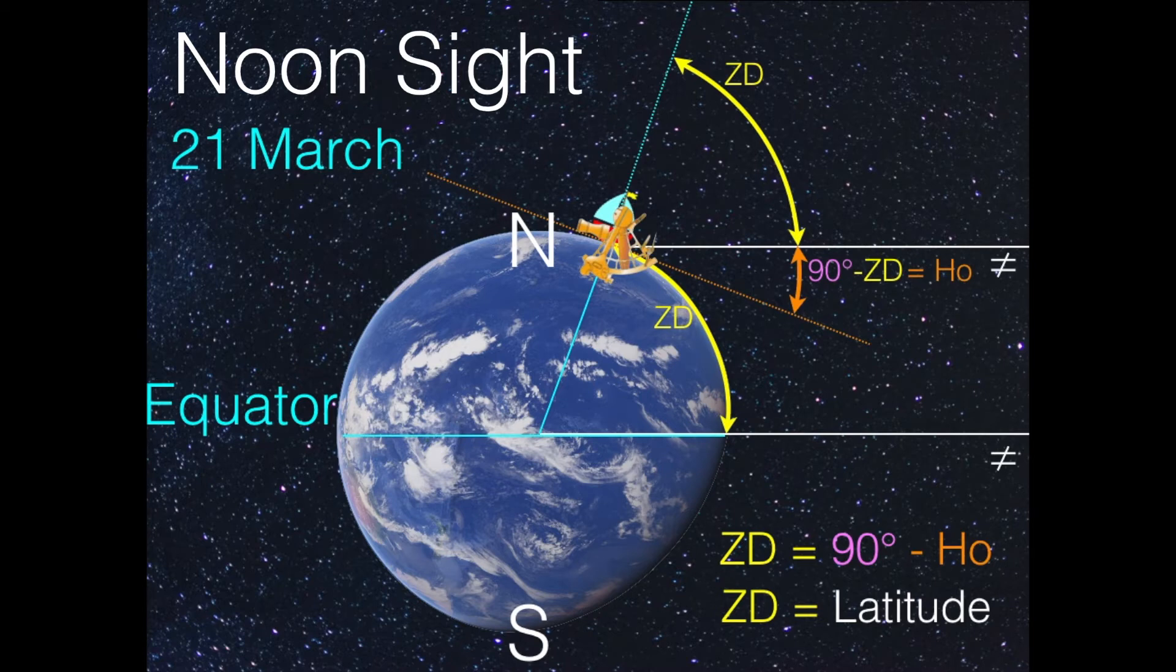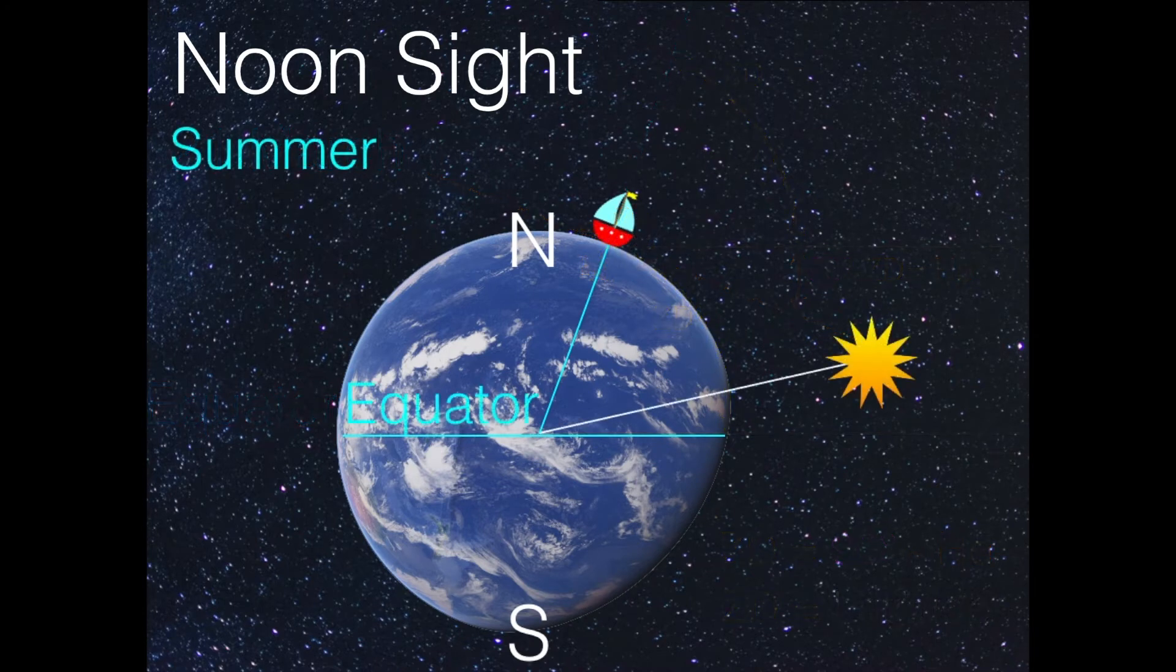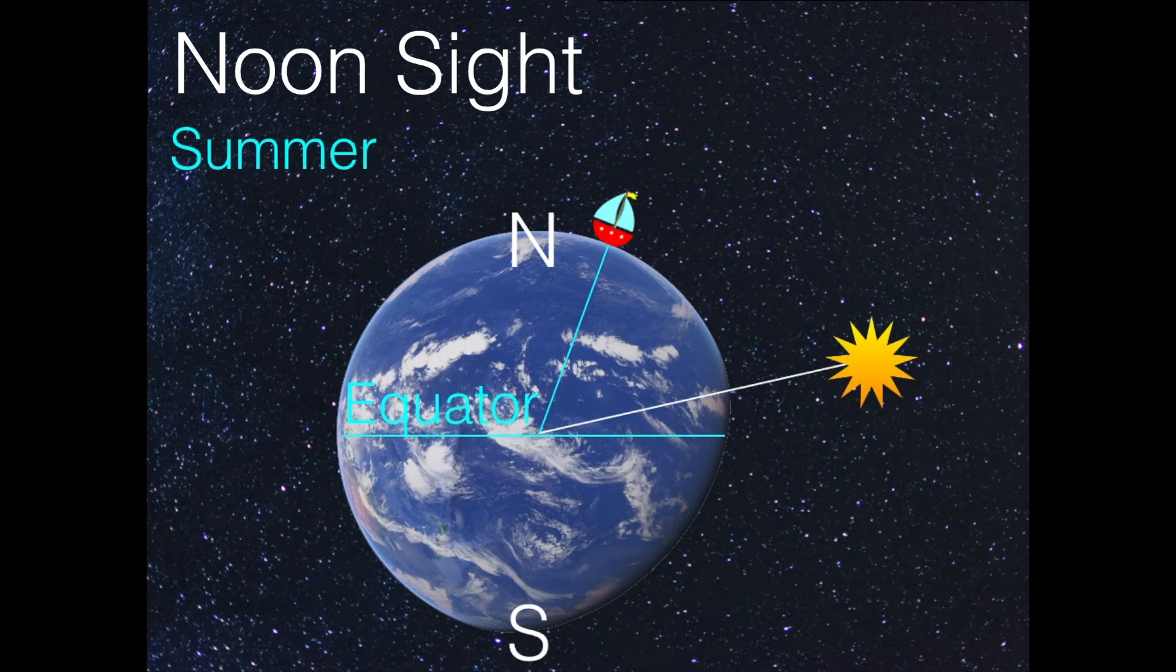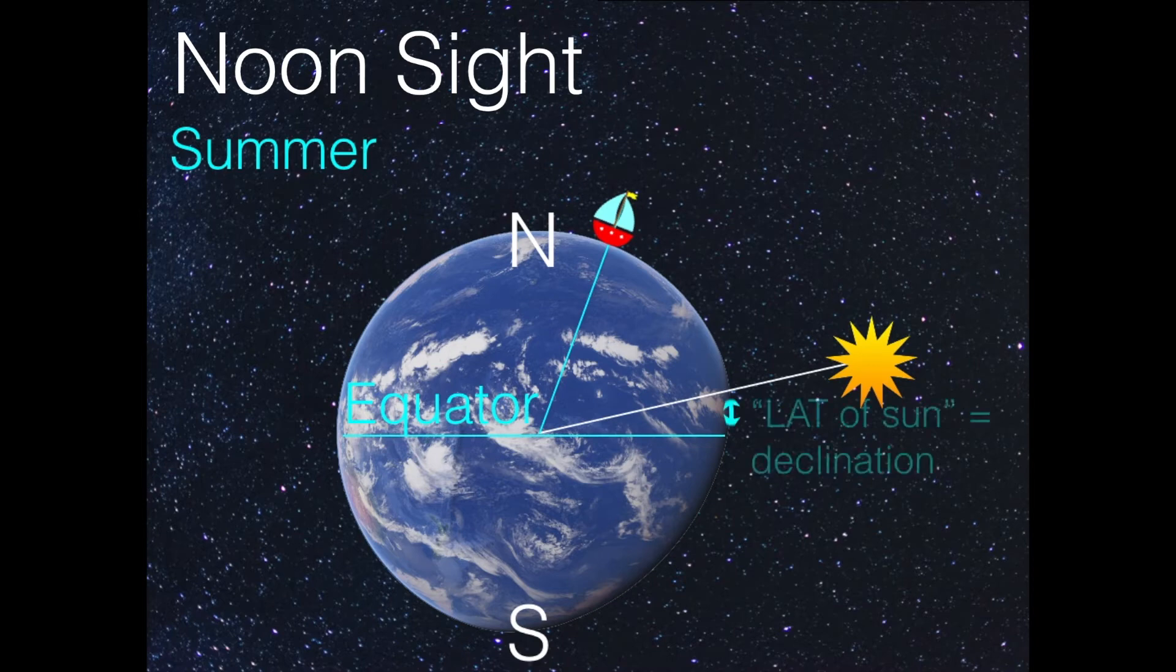So that makes it very simple to determine it on the 21st of March. Now, let's go into the next situation, that the sun is not exactly above the equator, but it is summer, so it is on the northern hemisphere somewhere. And here we have to know that the sun also has a latitude. And this latitude of the sun is called declination. Another fancy word that the seamen use. So they call the latitude of the sun the declination.